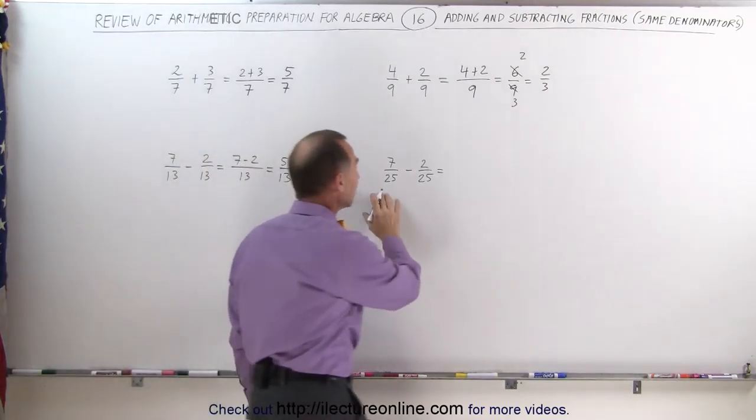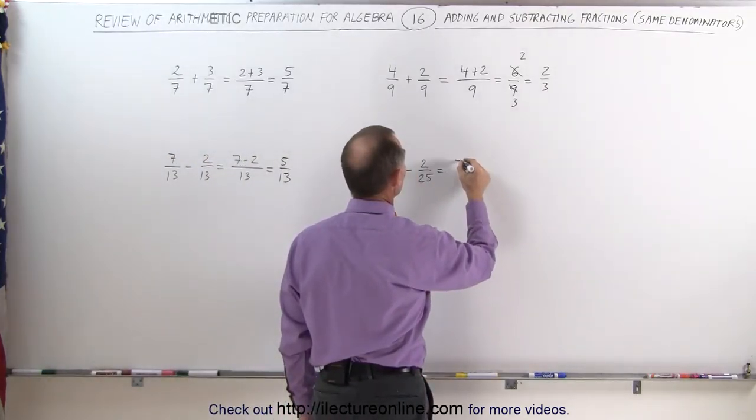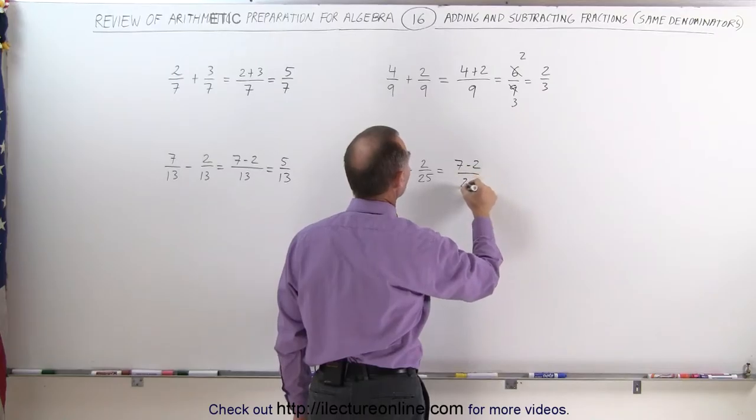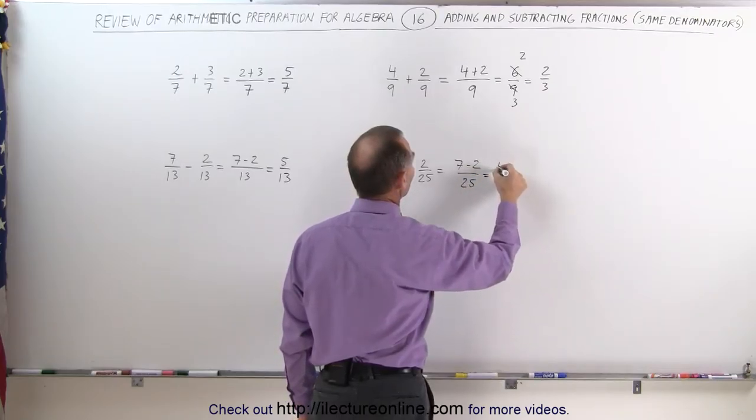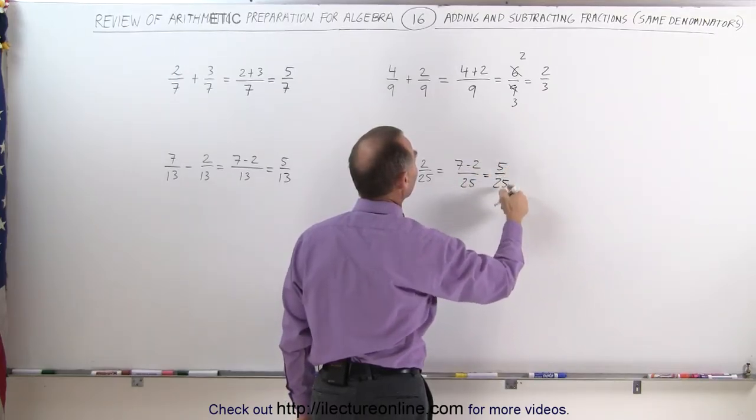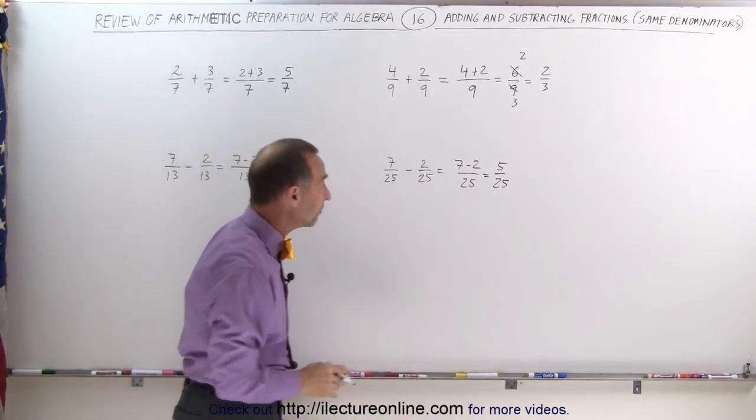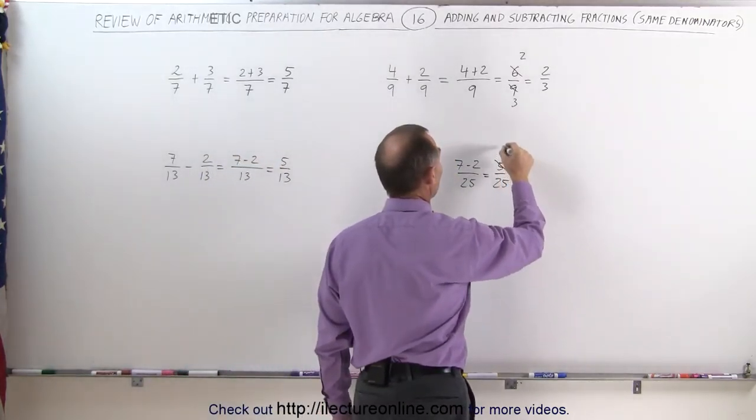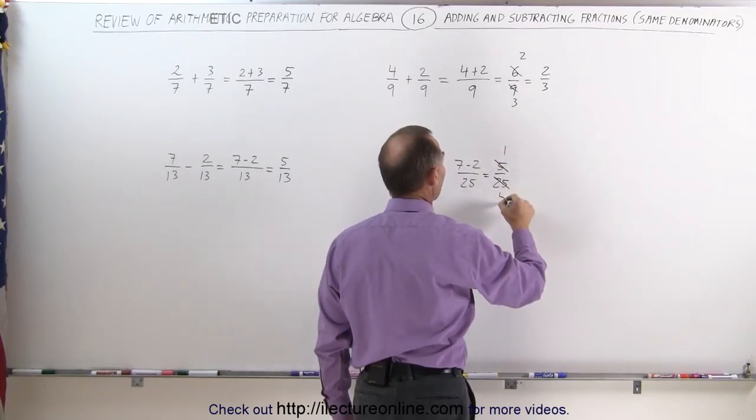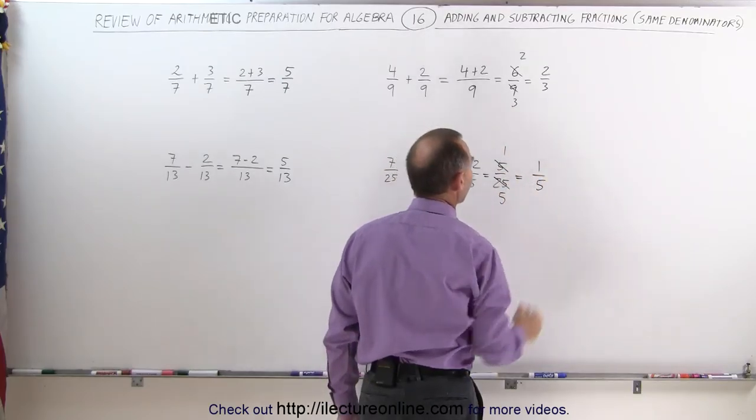Here as well, if the denominators are the same, this can be written as 7 minus 2 over 25. In this case, that's equal to 5 over 25. And again, both the numerator and the denominator can be divided by the same number 5 in this case. 5 divided by 5 is 1, 25 divided by 5 is 5. This can be written as 1 fifth.